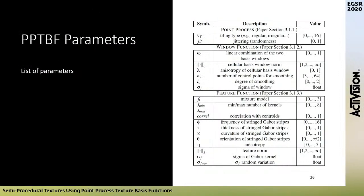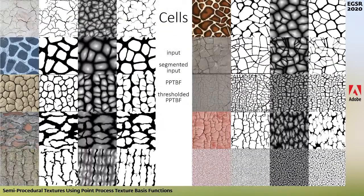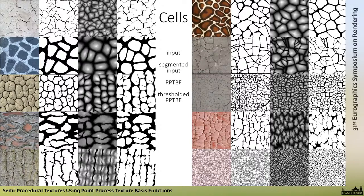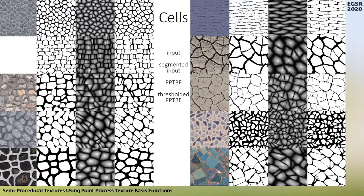Here is the complete list of PPTBF parameters used to model stochastic structures. To evaluate our PPTBF model, we segmented a database of 150 textures plus 20 materials — scanned and procedural PBR — and checked if we can reproduce the structures. For each image, we show four columns left to right: the input image, the segmented binary image, our PPTBF, and its thresholded version. You have to compare the second and fourth columns to evaluate the procedural structures, and you can see they are really close.